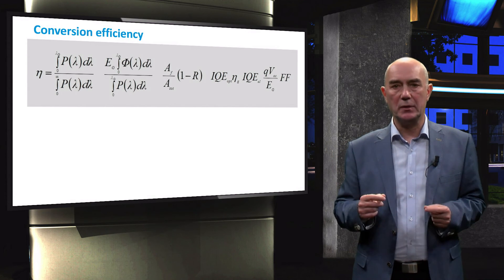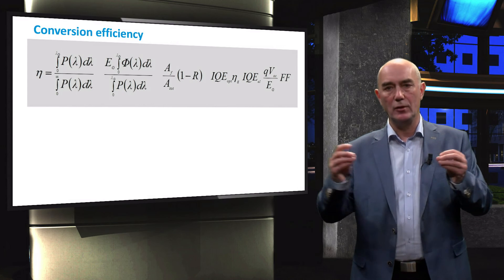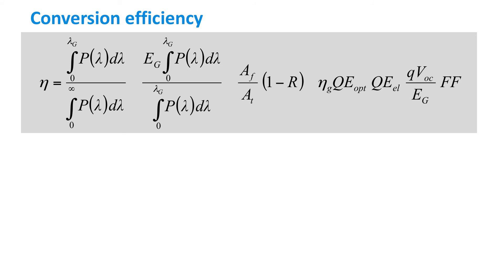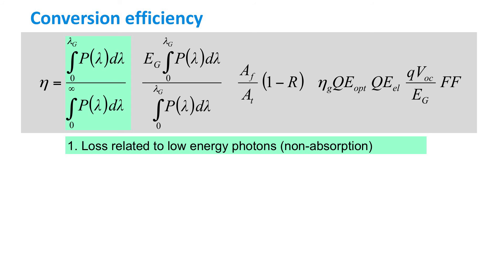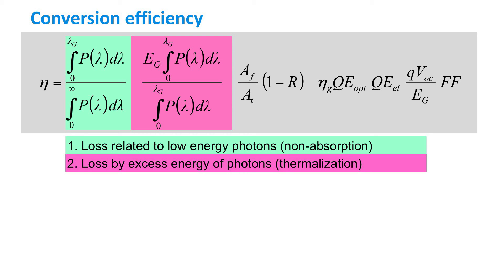Now, let's put all the loss terms together to get the full equation for the conversion efficiency, eta. The short-circuit current density is substituted by the expression we have just derived. By performing additional substitutions and rearrangements, we arrive at the conversion efficiency in terms of every particular loss in a solar cell. The first term describes the non-absorption of photons with less energy than the band gap of the absorber material. The second term represents the thermalization of excess photon energy for photons of higher energy than the band gap.